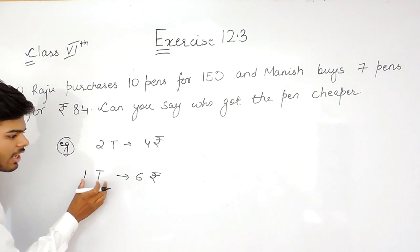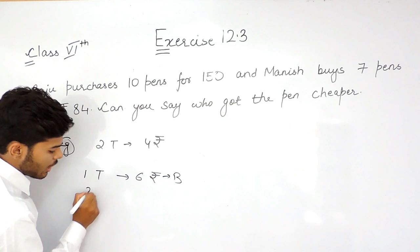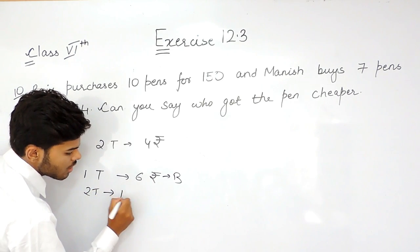If you wanted to have 2 toffees of type B, then 2 toffees of type B will cost 12 rupees.